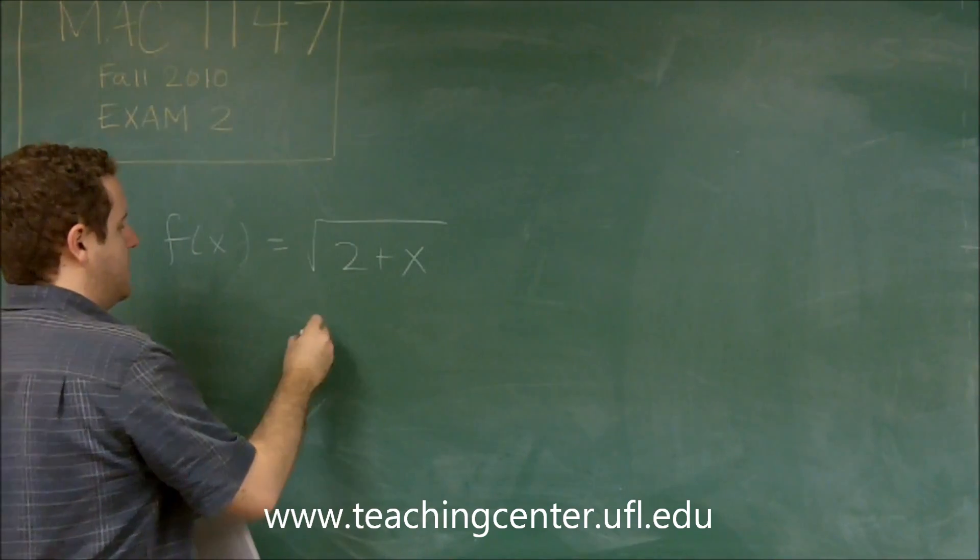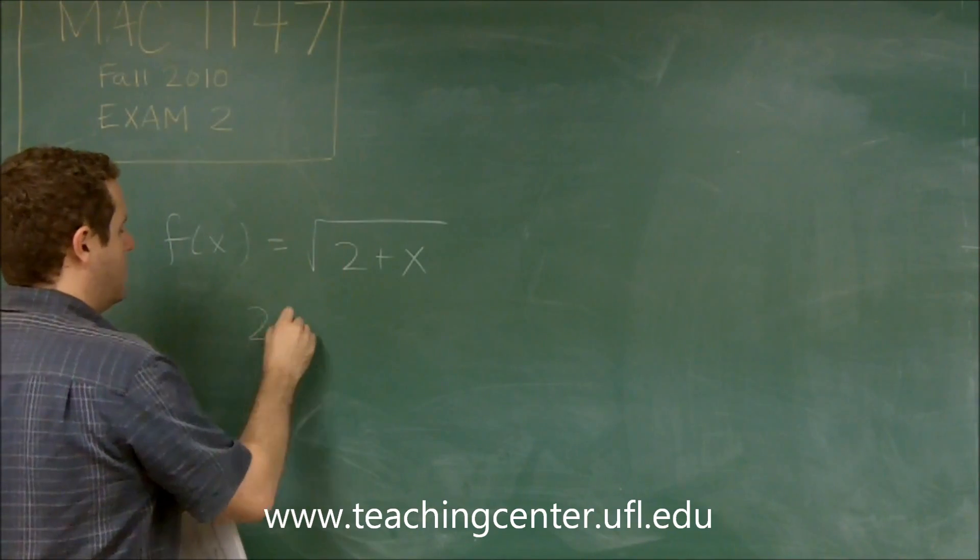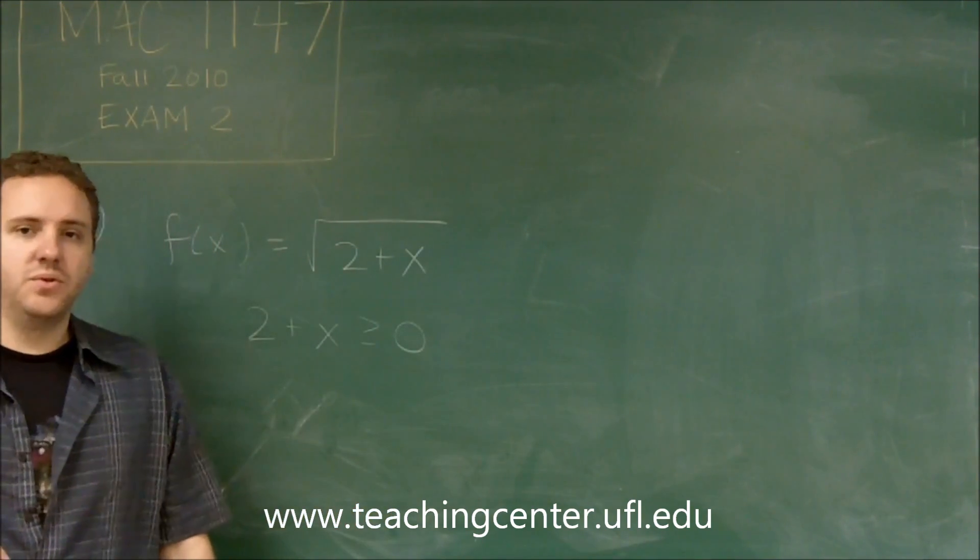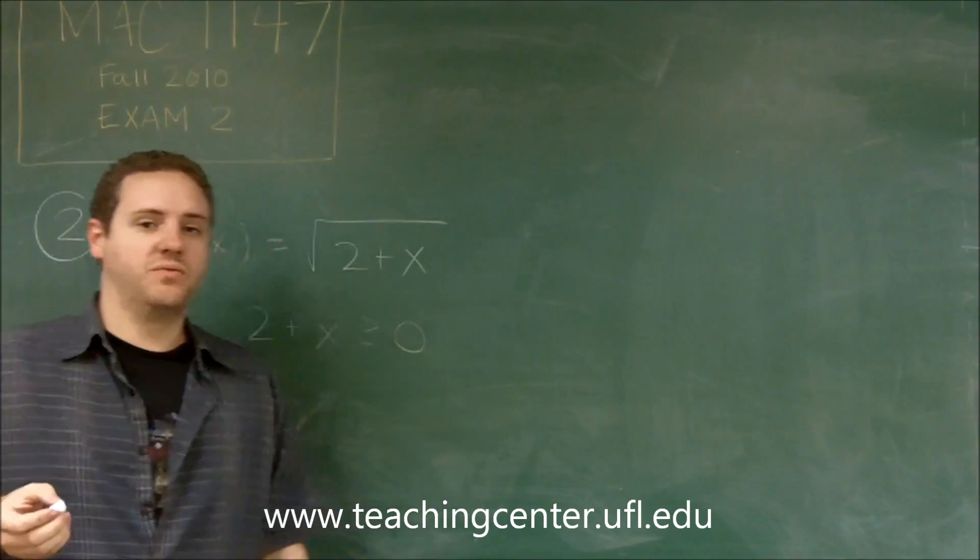What we need to do is just find the domain of this, and of course if we have a square root, we set what's inside to be greater than or equal to zero. That's our rule for finding the domain of any square root function.